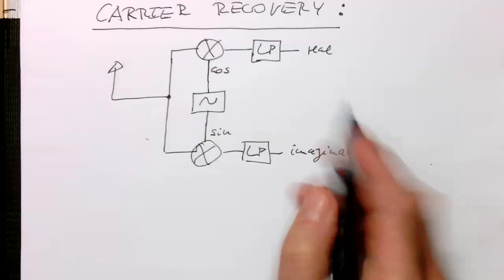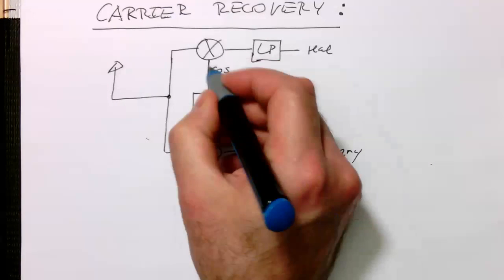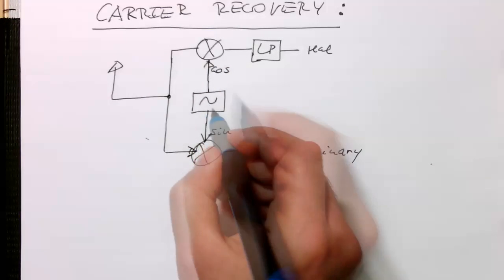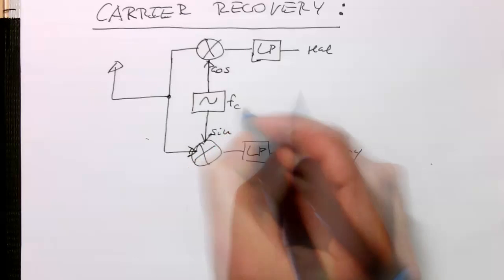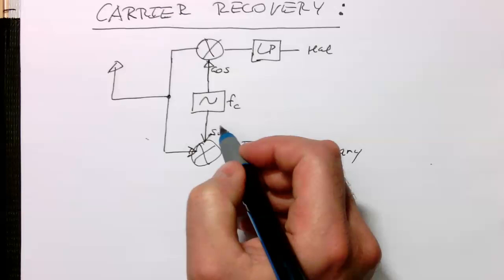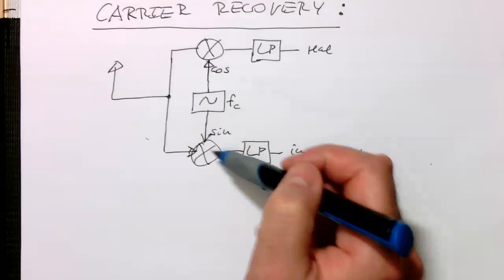And so on. So now, in order to make this to work on the receiver, so this sine wave here generated, so this carrier signal here needs to be exactly the same phase as on the transmitter side, so that we are able to distinguish between our cosine and our sine wave.